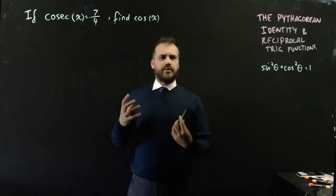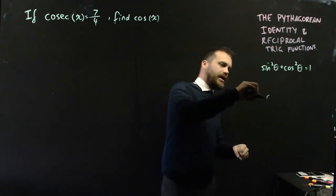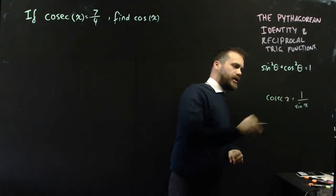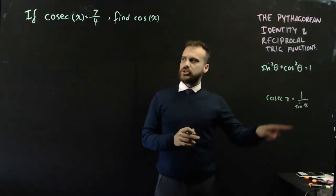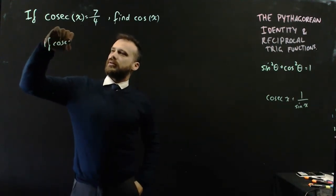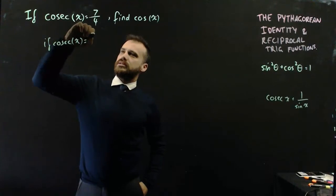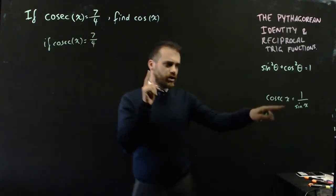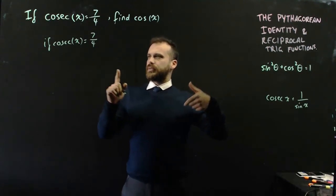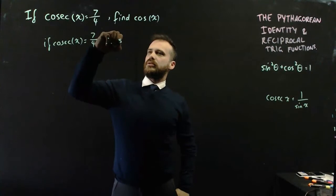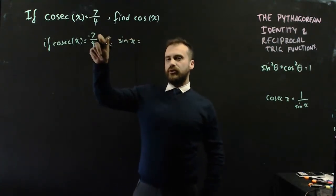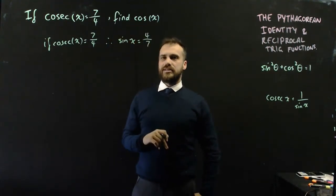Okay, what's cosec x? Well, cosec x is equal to 1 on sine x. And that's useful information, because if cosec x equals 7 on 4, then sine x equals 1 on that, which means that sine x equals 1 on 7 on 4, which is 4 on 7.